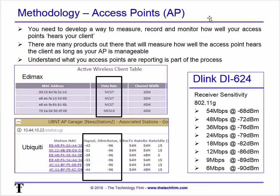You should go to your access points and make sure you understand: does it have a wireless client table, and what is it reporting? In this case there's an Edimax access point that tells us data rate, MCS index, and channel width 20/40. Other access points such as Ubiquiti will give you the MAC address, the signal strength (that RSSI value), and the noise floor.